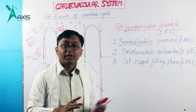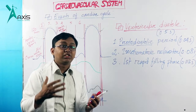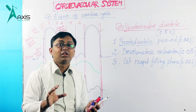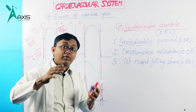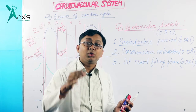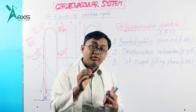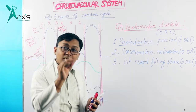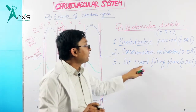During this rapid filling phase, blood from the atrium enters the ventricle. Ventricular pressure is lower than atrial pressure. The ventricle continues to relax, so pressure continues to fall in the left ventricle. This is the fast rapid filling phase — the mitral valve opens and blood fills rapidly from the left atrium into the left ventricle.